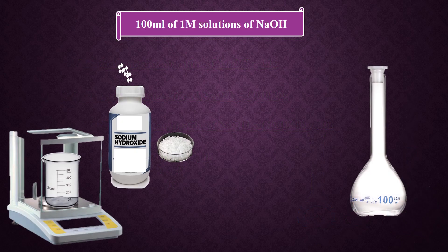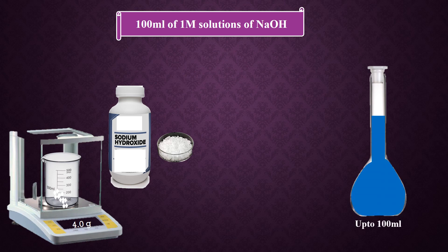Dissolve 4 grams of sodium hydroxide in a little water, then add the solution to a measuring flask, and dilute the solution up to 100 milliliters. This will also be a 1 molar solution of sodium hydroxide, but in 100 milliliters.